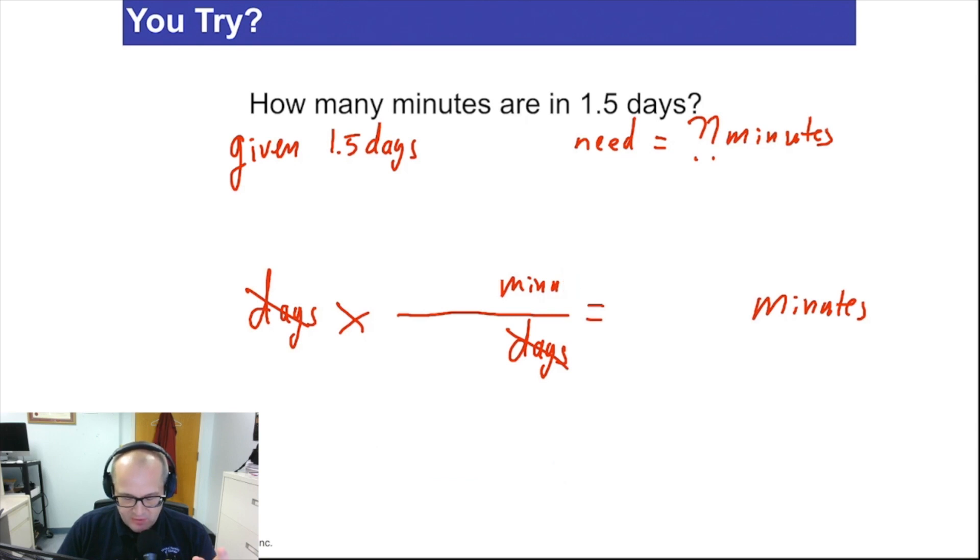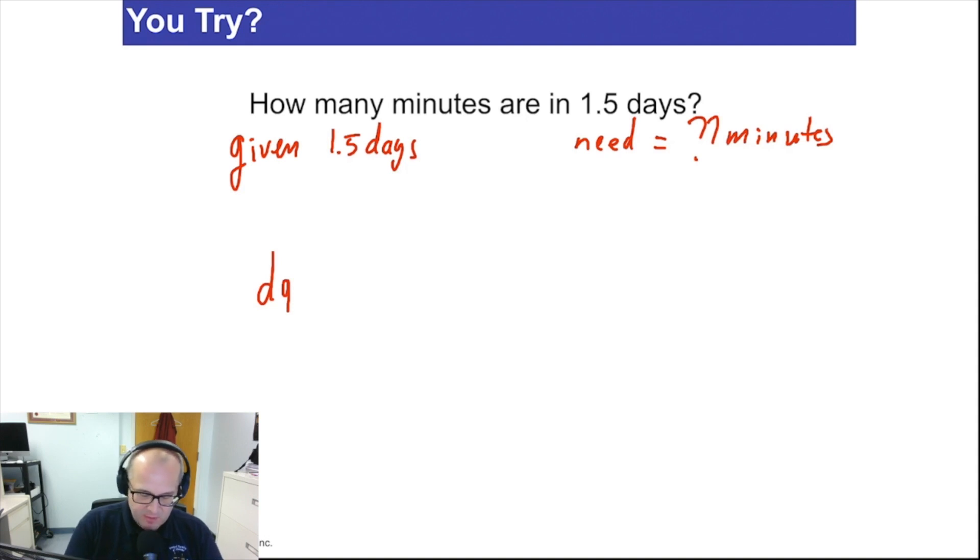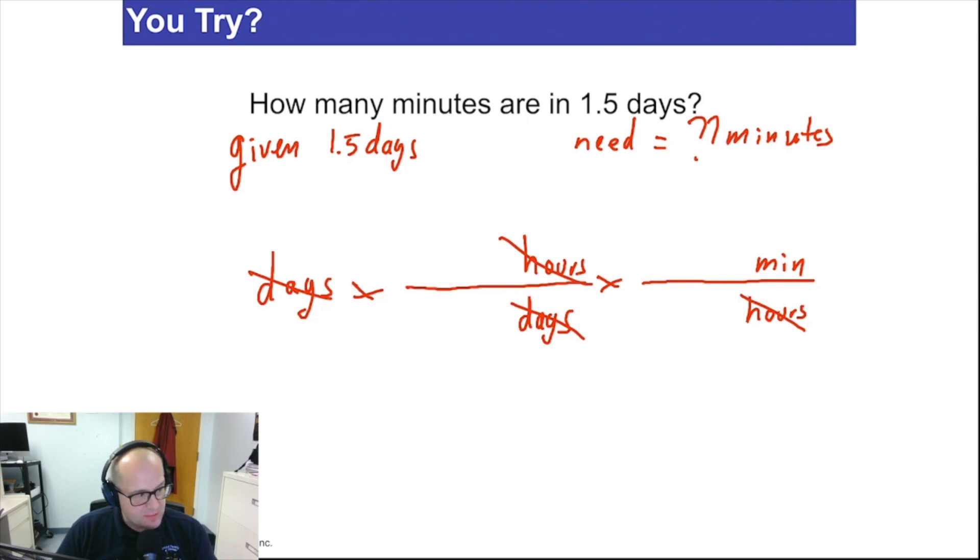So now we're going to get into a tougher example where there's actually a two-step conversion here because we don't know the equality between days and minutes. At least I don't know it. So it's going to look a little hard. And it is, in fact, it's a little bit challenging. But I want you to see exactly how you do this kind of question. It's not hard. You let the units work. Let the units always do the work. So we're going to start with the unit days. Days multiplied by something that puts days on the bottom. Now I know the conversion to hours. I can get from days to hours. And now I can go from hours to minutes.